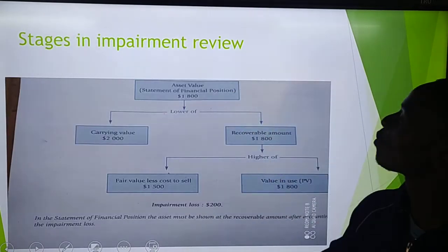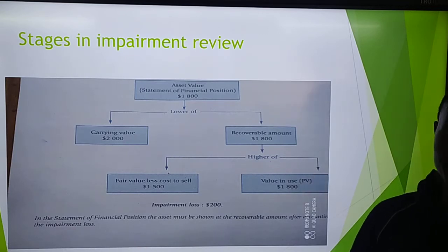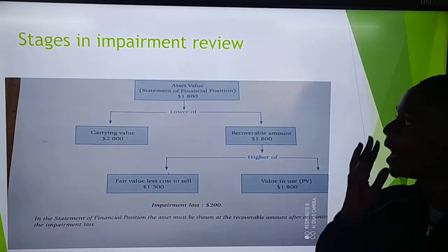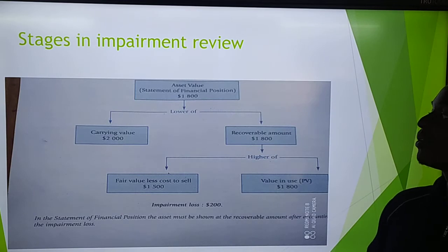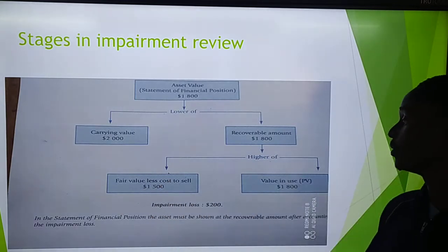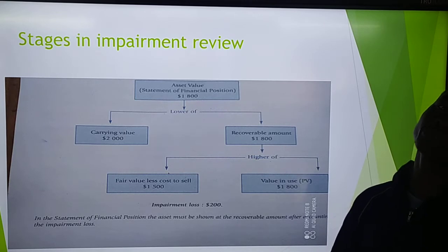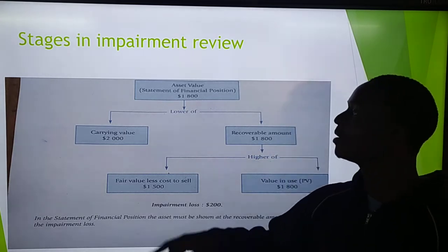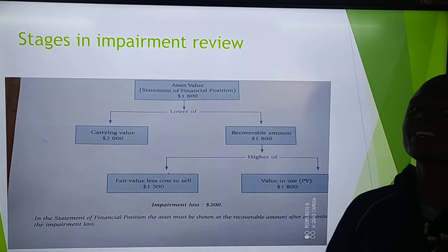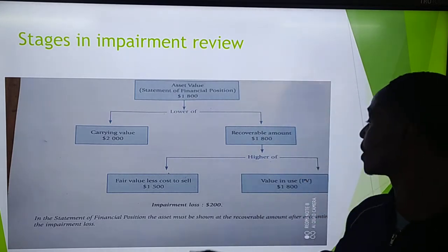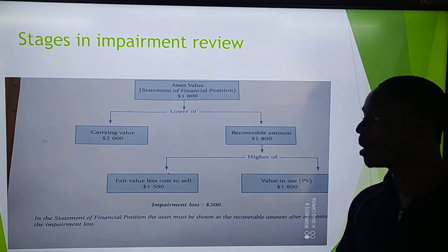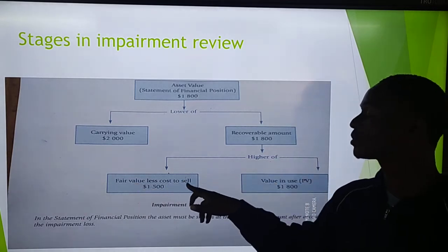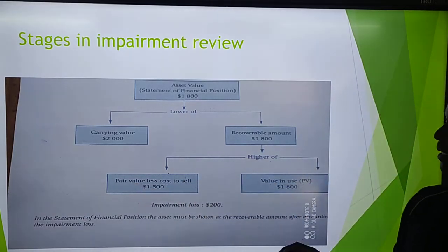What are the stages in impairment review? There are several stages which you follow. Normally, the examiner will ask you to determine the fair value less cost to sell, then the value in use, then the recoverable amount, then the carrying amount. The first thing you have to do is determine your recoverable amount. The recoverable amount is the higher of fair value less cost to sell and value in use — the higher of the two.